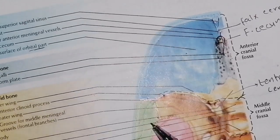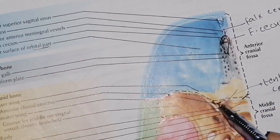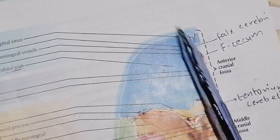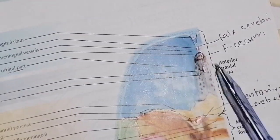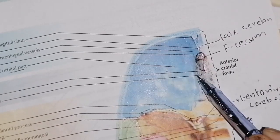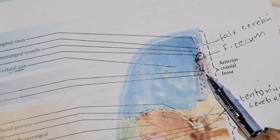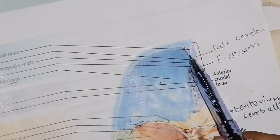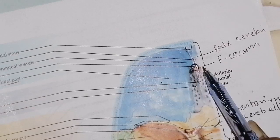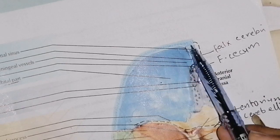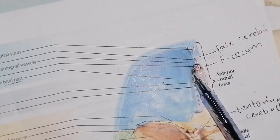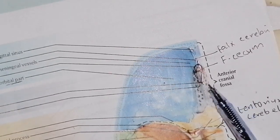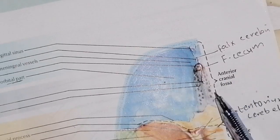The processes are called the anterior clinoid process and what is attached to it is the tentorium cerebelli. After that, on the floor we have orbital plates and on the other side we have the ethmoid cribriform plate. On the cribriform plate is the projection called crista galli, and attached to it is the falx cerebri. There is an aperture where the nasal mucosa veins go to the superior sagittal sinus, and on this side we have slits for the anterior ethmoid nerves.